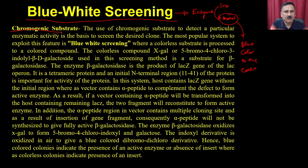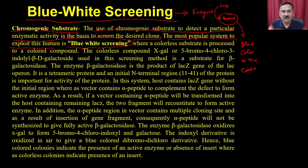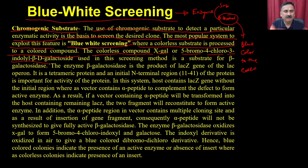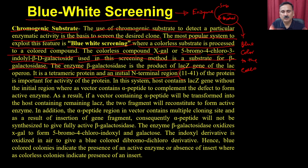Blue-white screening uses a chromogenic substrate to detect a particular enzymatic activity as the basis to screen the desired clone. The most popular system is blue-white screening, where a colorless substrate is processed to a colored compound. The colorless compound X-gal, also called 5-bromo-4-chloro-3-indolyl-beta-D-galactosidase, is used as a substrate for the enzyme beta-galactosidase, which is the product of the lacZ gene of the lac operon. It is a tetrameric protein, and the initial N-terminal region (amino acids 11–241) is important for activity.